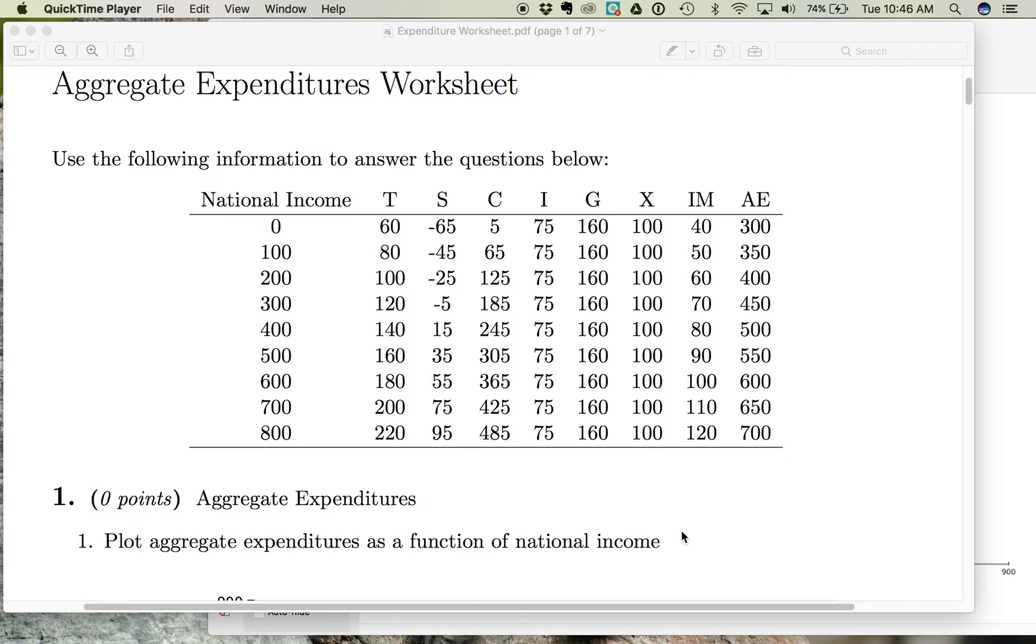So let's start with aggregate expenditures. Here we have levels of income for our economy, and here we have total spending. Notice that when national income is zero, there is still spending in our economy. There is some spending we do that does not depend on the level of income. For example, even if we all had no jobs and no paychecks, we would still need some basic necessities to survive.